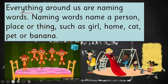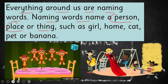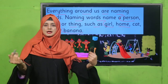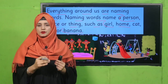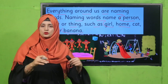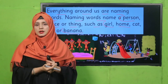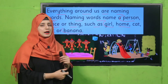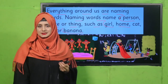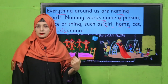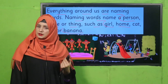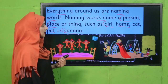What are naming words? Everything around us has naming words. Naming words are the names of a person, place, or thing — such as girl, home, cat, pet, or banana. Everything around us has a name. In your classroom you can see different things, different persons — all have names, and all of these are naming words. Nothing around us is without a name. So everything that has a name is a naming word.